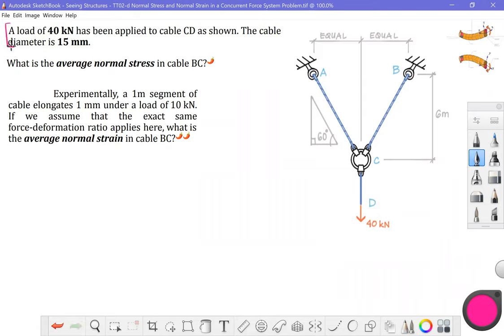It says a load of 40 kilonewtons has been applied to cable CD, as shown. And it's giving us a cable diameter of 15 millimeters. And we are asked to calculate the average normal stress in cable BC. That's this one right over here. We can get that area of the cable really easily because we've got the diameter given to us in the problem.